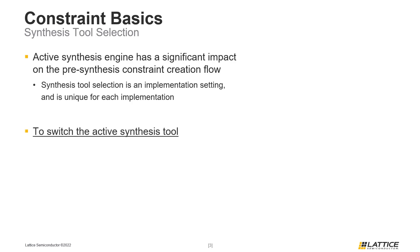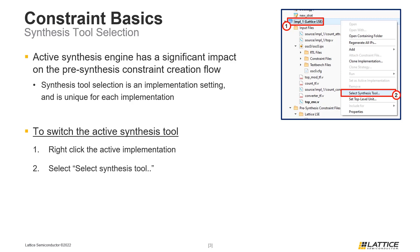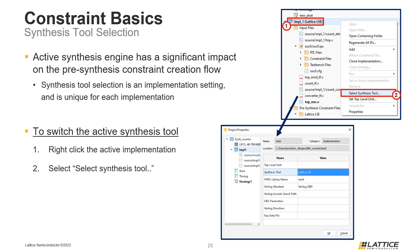To switch the active synthesis tool for a project, right-click the name of the active implementation in the file list tab. From the drop-down that appears, select the option called 'Select Synthesis Tool.' This will open the project settings window. Locate the field called 'Synthesis Tool' and use its drop-down to select a different synthesis tool. To confirm the changes, click the OK button in the bottom right.